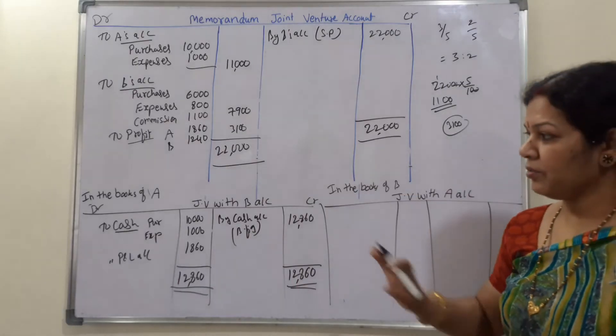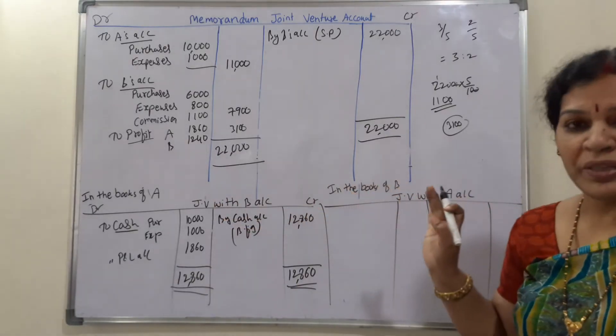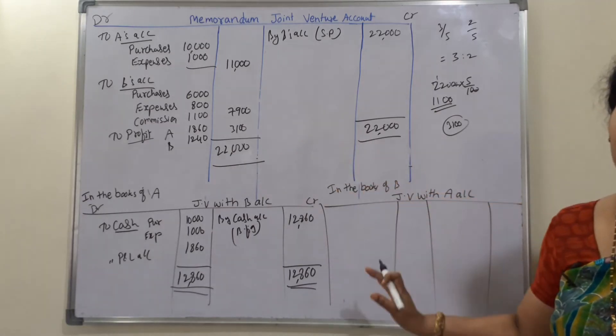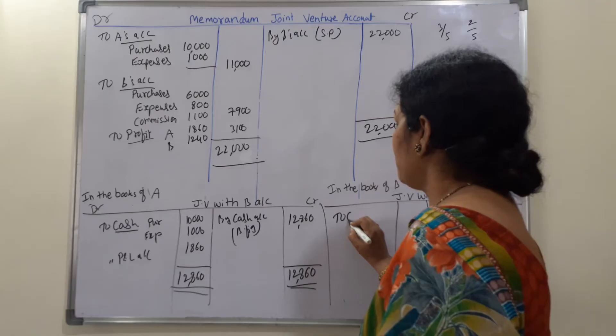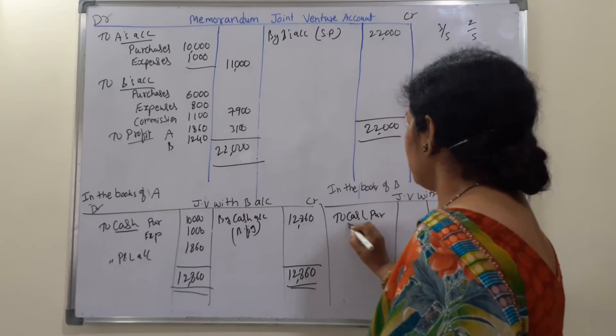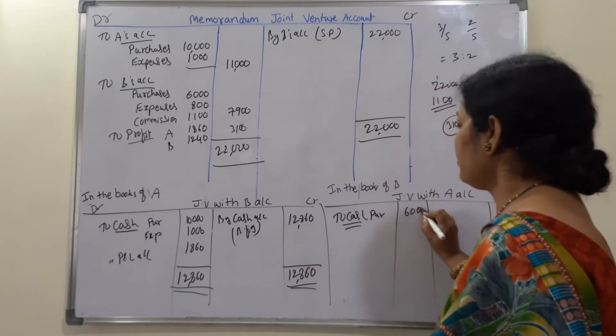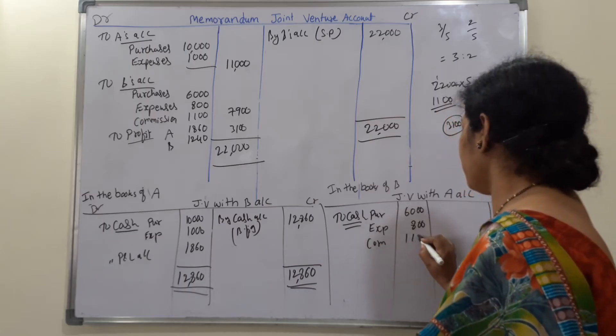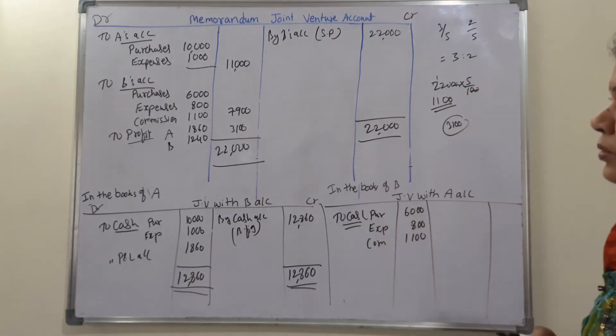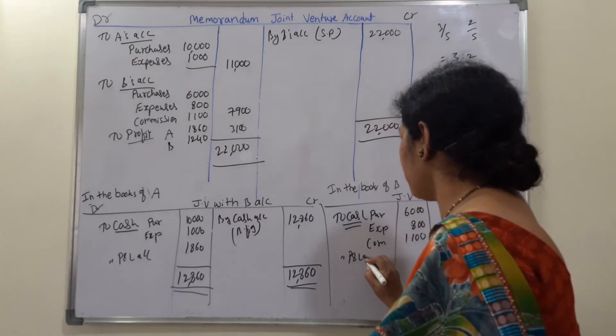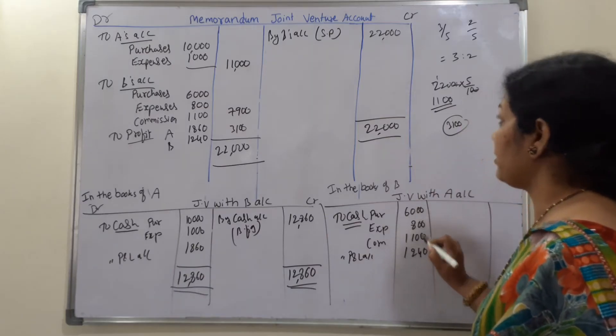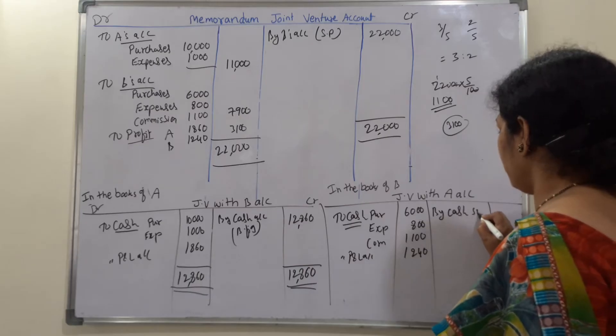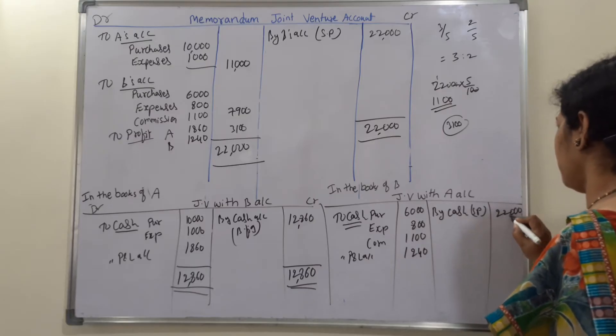Joint venture with B's account is in the books of A. Next, in the books of B, joint venture with A's account. In the books of B means we will take the transactions related to B only. These transactions are here. First one, to cash purchases 6,000, next expenses 800, commission 1,100.